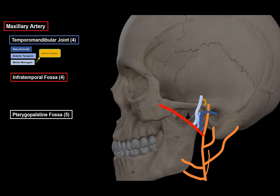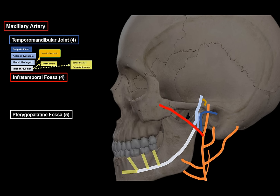Another important branch is the inferior alveolar artery, which travels along the mandibular canal and exits through the mental foramen as the mental artery, supplying the skin and muscles of the chin. The inferior alveolar artery provides blood supply to the inferior teeth and gums via the dental and peridental branches, and also supplies the muscles of the floor of the mouth — the mylohyoid muscle and the anterior belly of the digastric muscle.